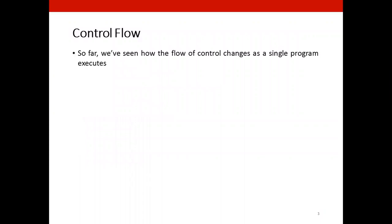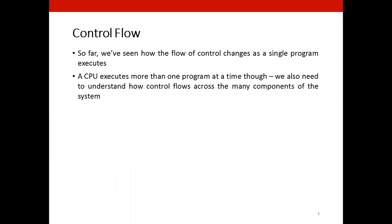So far, we have seen how the computer executes your programs and how the control flow actually changes within the program. However, the CPU executes more than one program at a time and each one of those programs requires some resources that are not directly accessible.